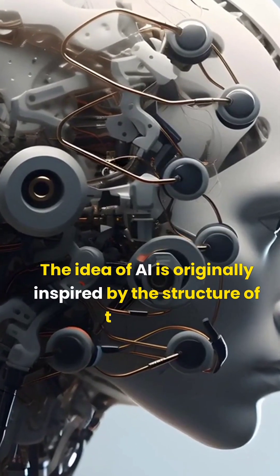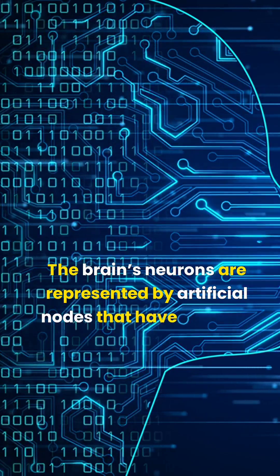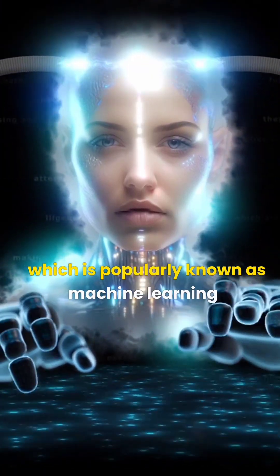The idea of AI is originally inspired by the structure of the brain. The brain's neurons are represented by artificial nodes that have different values. These nodes are then trained, which is popularly known as machine learning.